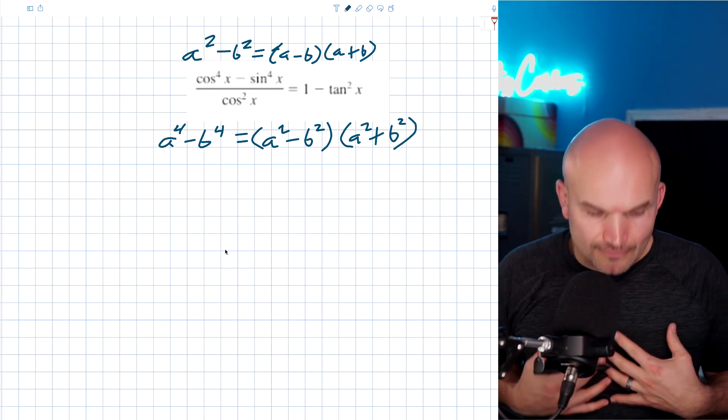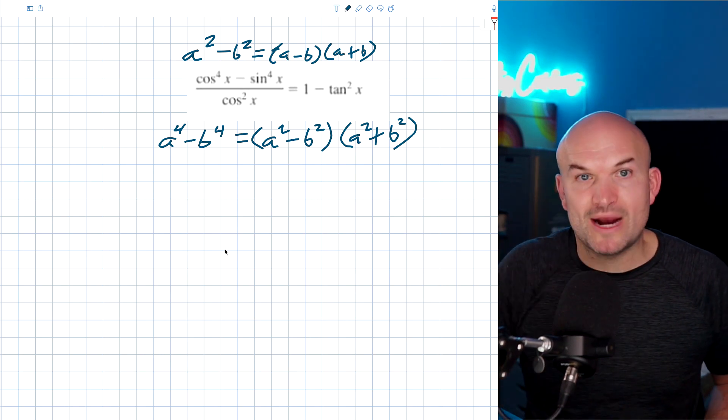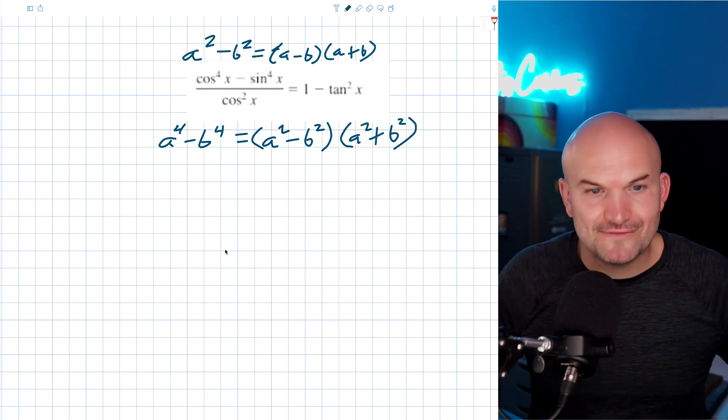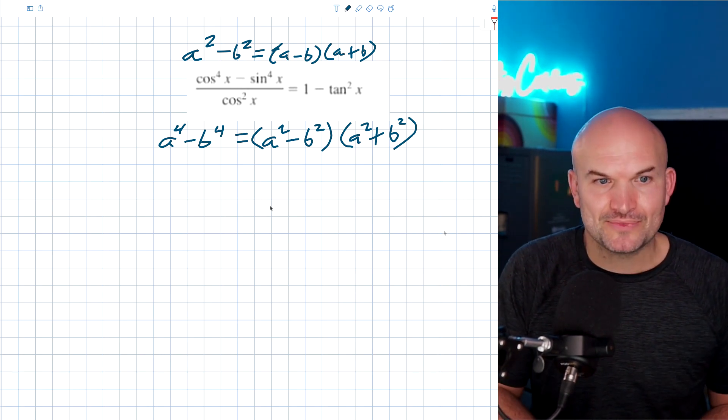Now, the important thing about using the difference of two squares or rationalizing a trigonometric function is knowing your Pythagorean identities. You have to know your Pythagorean identities.